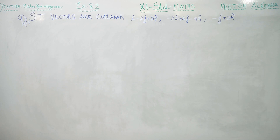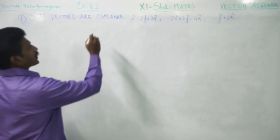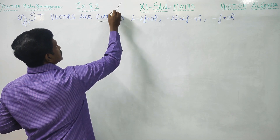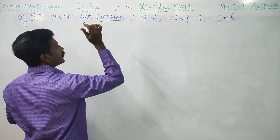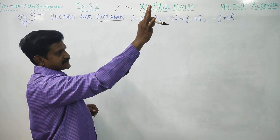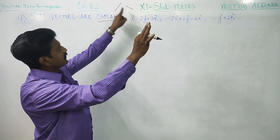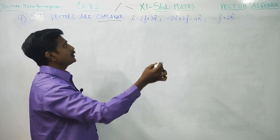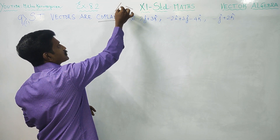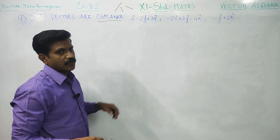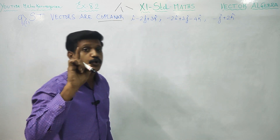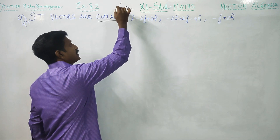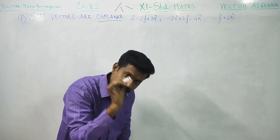This is a very important sum — show that the vectors are coplanar. What is the meaning of coplanar? If one vector lies on this whiteboard and another vector lies on the same whiteboard, but the third vector is in a different space, then these three vectors are not coplanar. If all three vectors lie on the same plane, then the vectors are called coplanar.